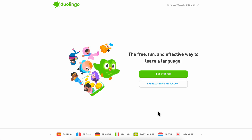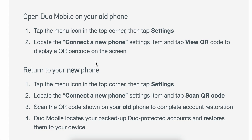To transfer Duolingo to your new phone, go to your old phone and open Duolingo. Tap the menu icon in the top corner, then tap Settings. Locate the 'Connect a new phone' settings item and tap on 'View QR code' to display a QR barcode on the screen.